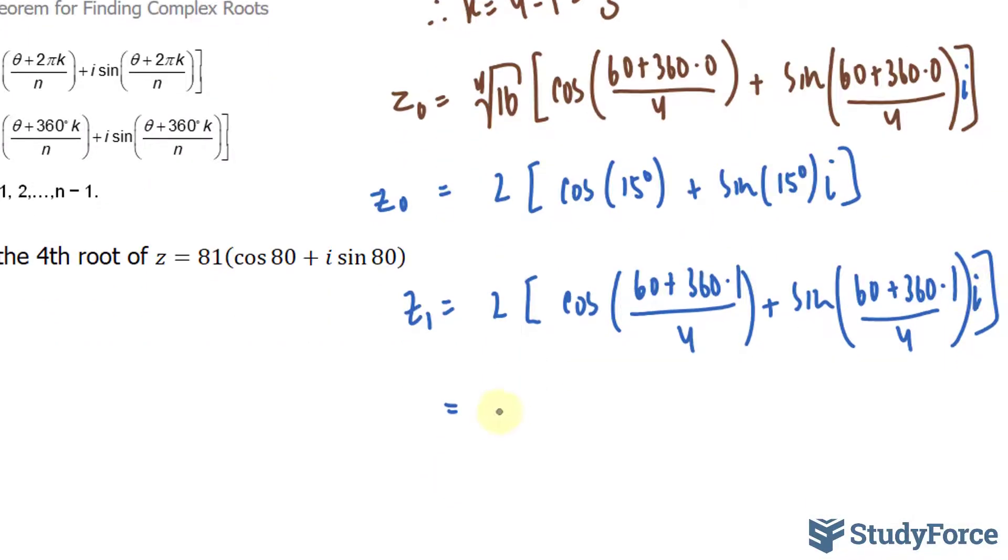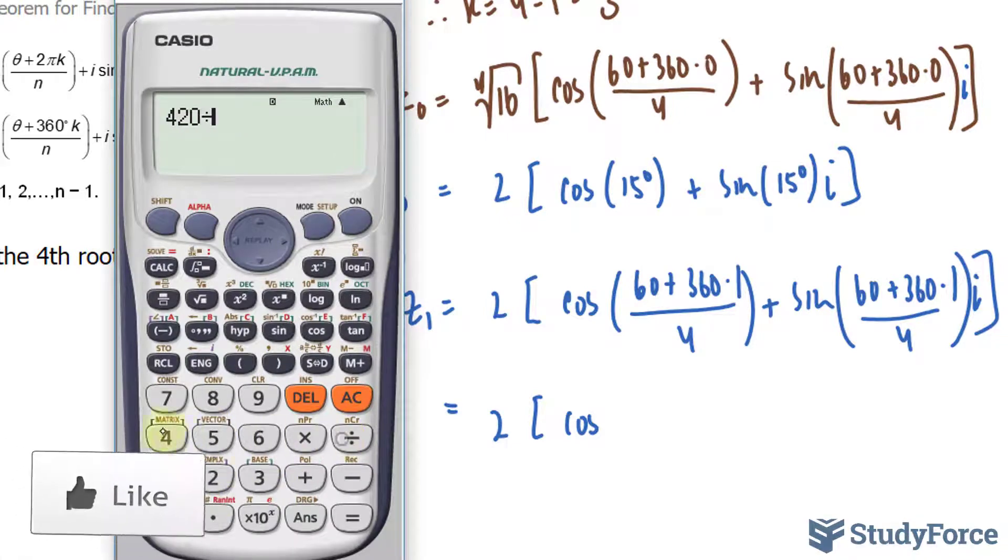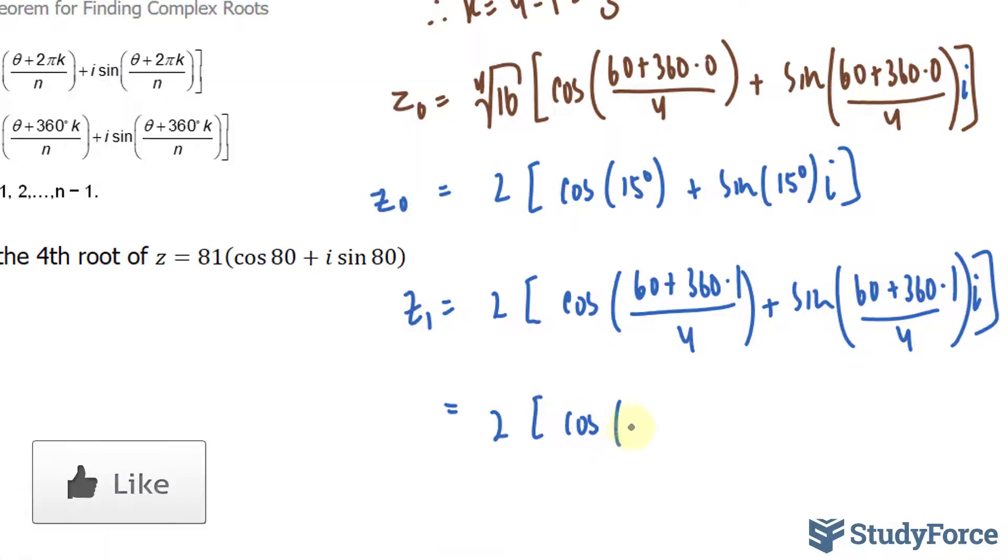Simplifying this, we get 2 cosine 60 plus 360 is 420, and 420 divided by 4 is 105. So we write down 105 to both, and that's the second complex number.